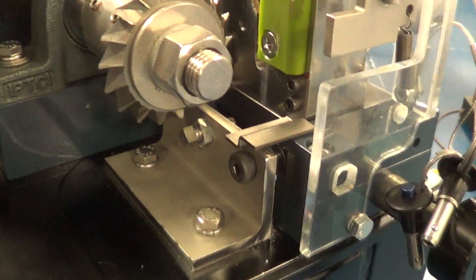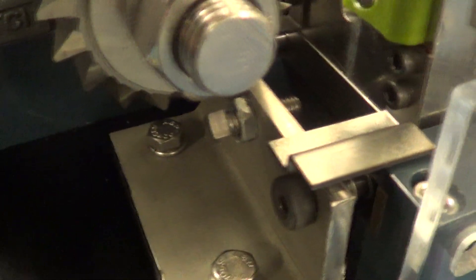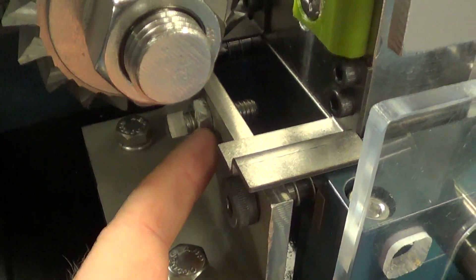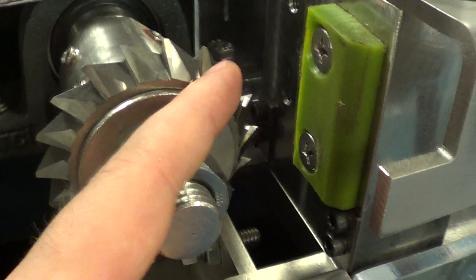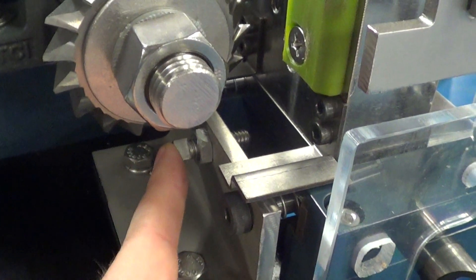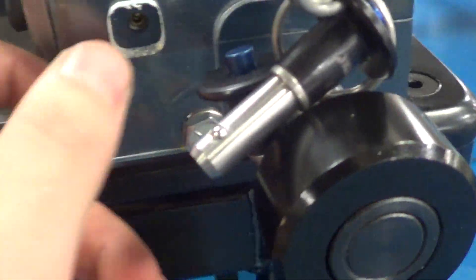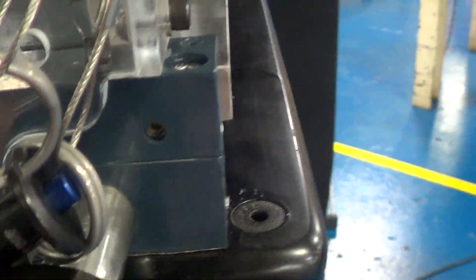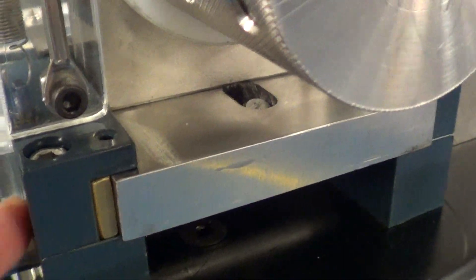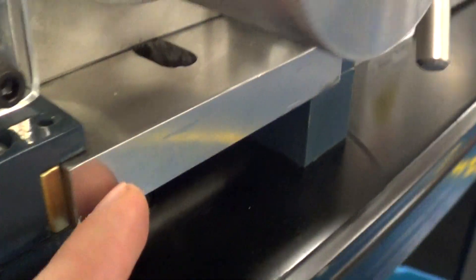A couple other items to note is the hard stop in here. This can be adjusted to get your correct depth of cut. I'll have a recommendation within the manual of how to do this. I also have adjustments here and here, and that's to adjust this slide in and out. So once this wears down, you can just push these back in so it's tight in here.